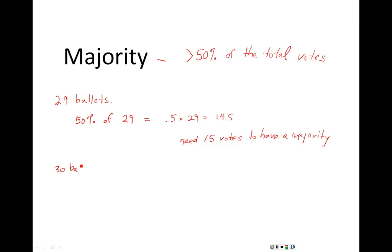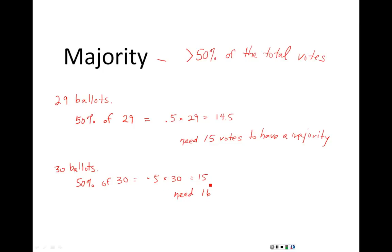Let's see what would happen if we had one more ballot come in. Again, to have a majority, I need more than 50% of the total votes. So first, figure out what 50% of 30 is: .5 times 30 gives us 15. Now, this is where you need to be really careful — you need more than 50%, so you would need not 15 but more than 15. Since you can't have partial ballots, you'd need to go up to 16 votes to have a majority with 30 ballots.